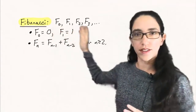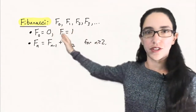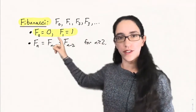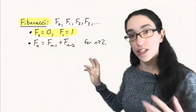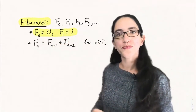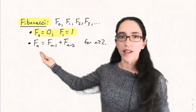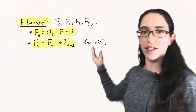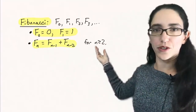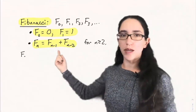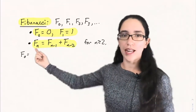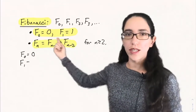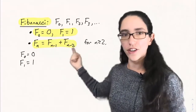As a sequence, it's F₀, F₁, F₂, … where F₀ is 0, F₁ is 1 — those are the two initial conditions. And then Fₙ is Fₙ₋₁ plus Fₙ₋₂ for n greater than or equal to 2. Notice we look two steps back here. To get Fₙ, we look at the previous two terms. So we do need two initial conditions to get us started.